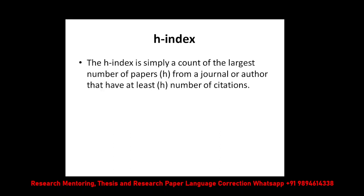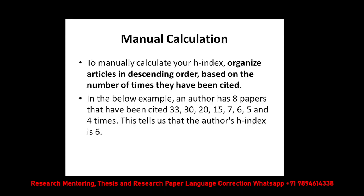How is the H-index measured? It is very simple — you use a mathematical formula. It is simply a count of the largest number of papers from a journal or an author that have at least H number of citations. It may confuse you, so let me explain in a detailed way. Assume you have some papers organized in descending order by citation count.